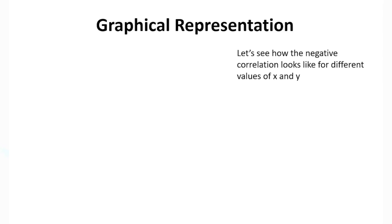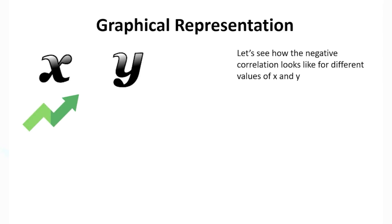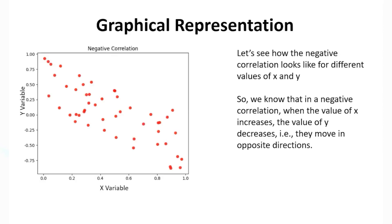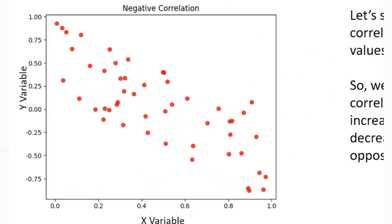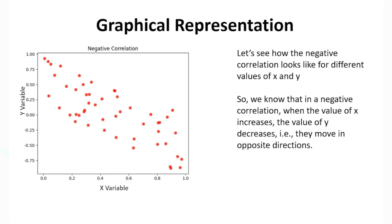To understand negative correlations, it simply means as x increases, y decreases. Visually, as x increases from 0 to 1, y is decreasing from 1 to negative 0.75. This leads to a decrease in the y variable as x increases, which is why the relationship is negative.